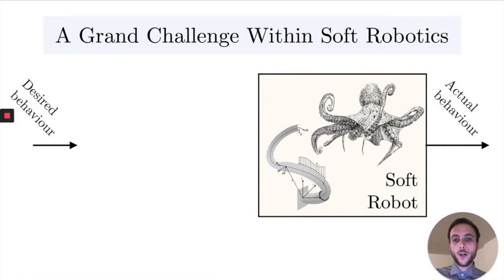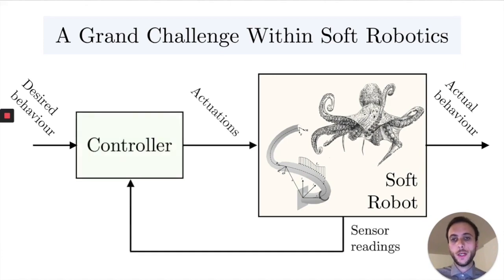Let's consider this very general framework. We have a soft robot, we have a desired behavior, and we want to implement this behavior by means of feedback model-based control.